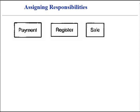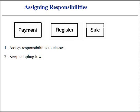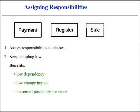Consider the following partial class diagram, taken from a point-of-sale case study. We might want to assign responsibilities to classes so that coupling between instances remains low. This principle benefits low dependency, low change impact, and increased possibility for reusing objects.